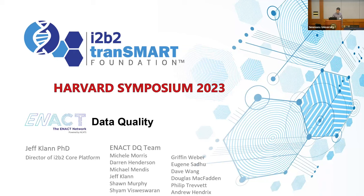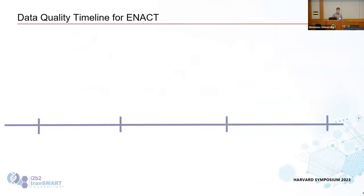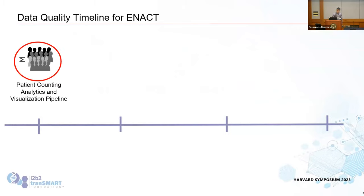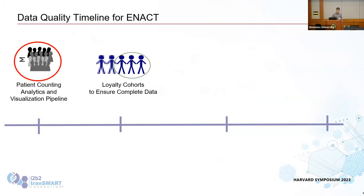One of the core goals of ENACT is to improve data quality for use in federated research networks — ENACT first and foremost, but other networks as well. The major push right now, and continuing into next year, is a patient counting analytics and visualization pipeline. I'm going to talk about that for the majority of this talk.